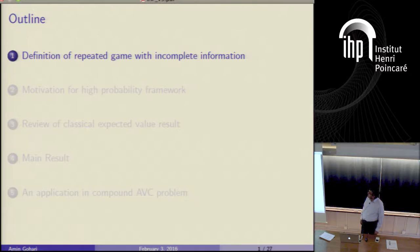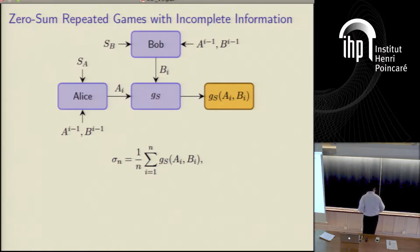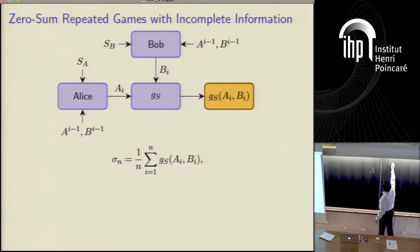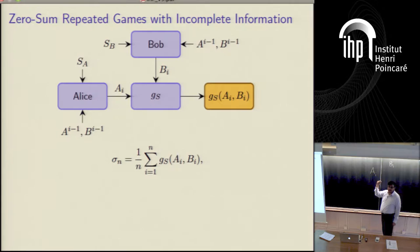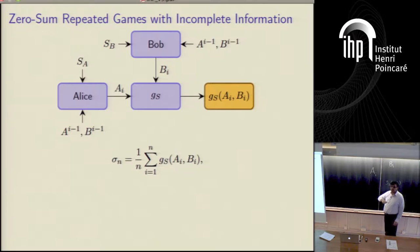First I'm going to define the setup for repeated games with incomplete information. Suppose there are two players, Alice and Bob. I denote the action of Alice by A and the action of Bob by B. Since it's a repeated game, I use A_i to denote Alice's action at time step i, and B_i to denote Bob's action at time step i. I assume a zero-sum game, so I only need to specify Alice's payoff. Alice's payoff depends on A_i, B_i, and some state random variable S. This state random variable is chosen at the beginning of the game and fixed throughout—chosen once and for all.